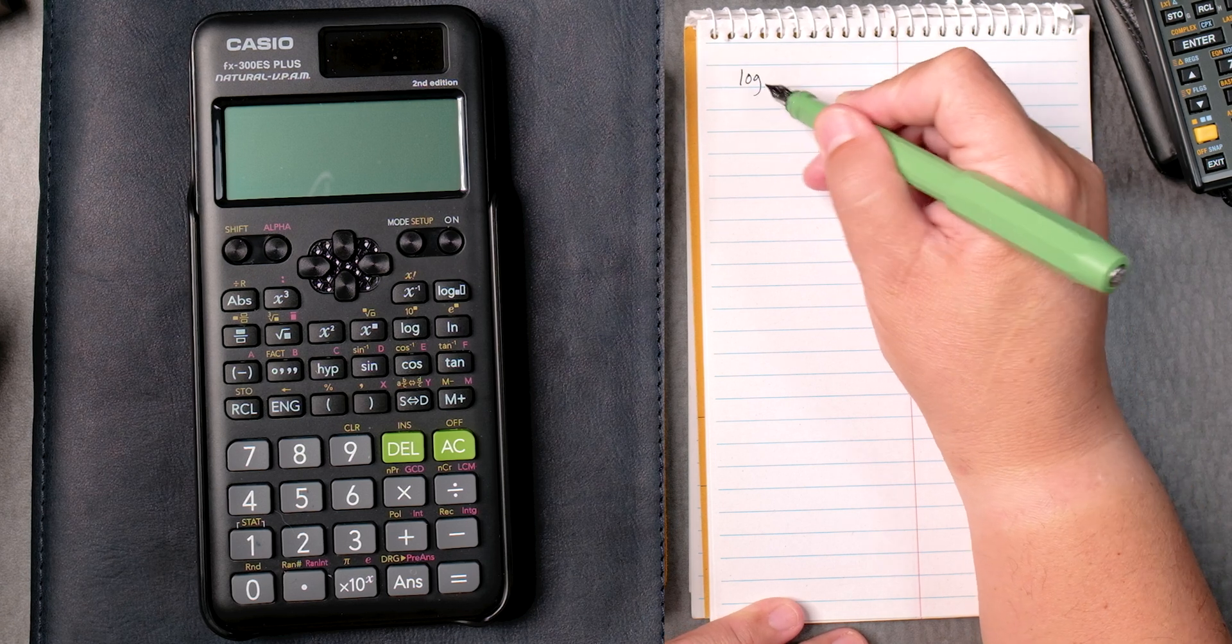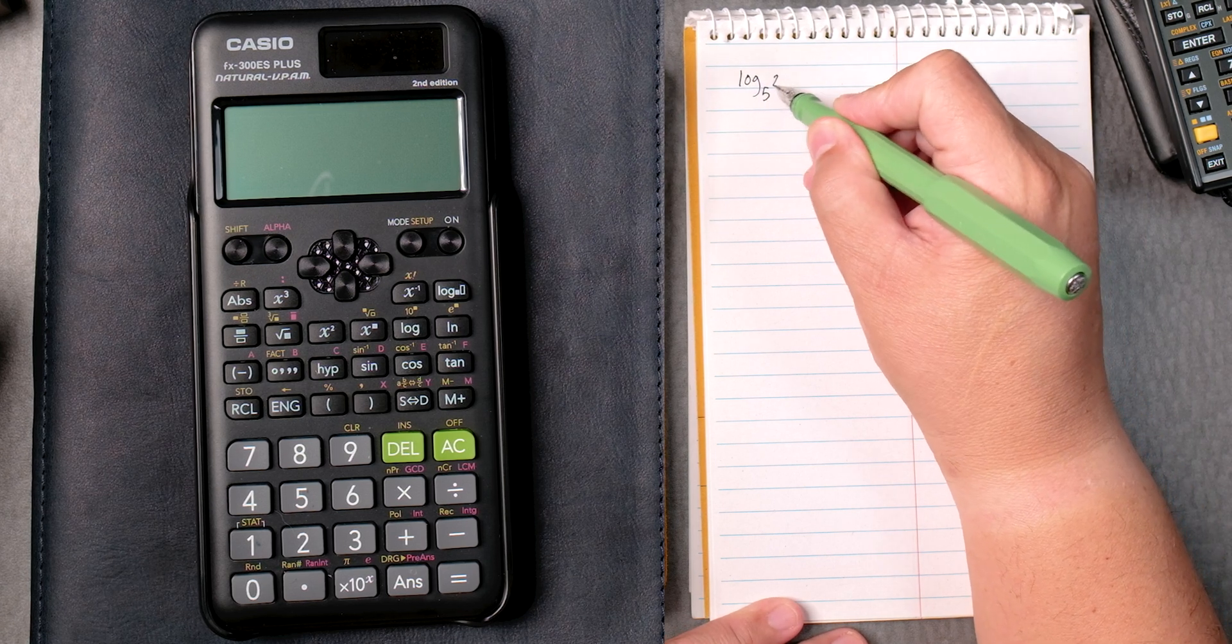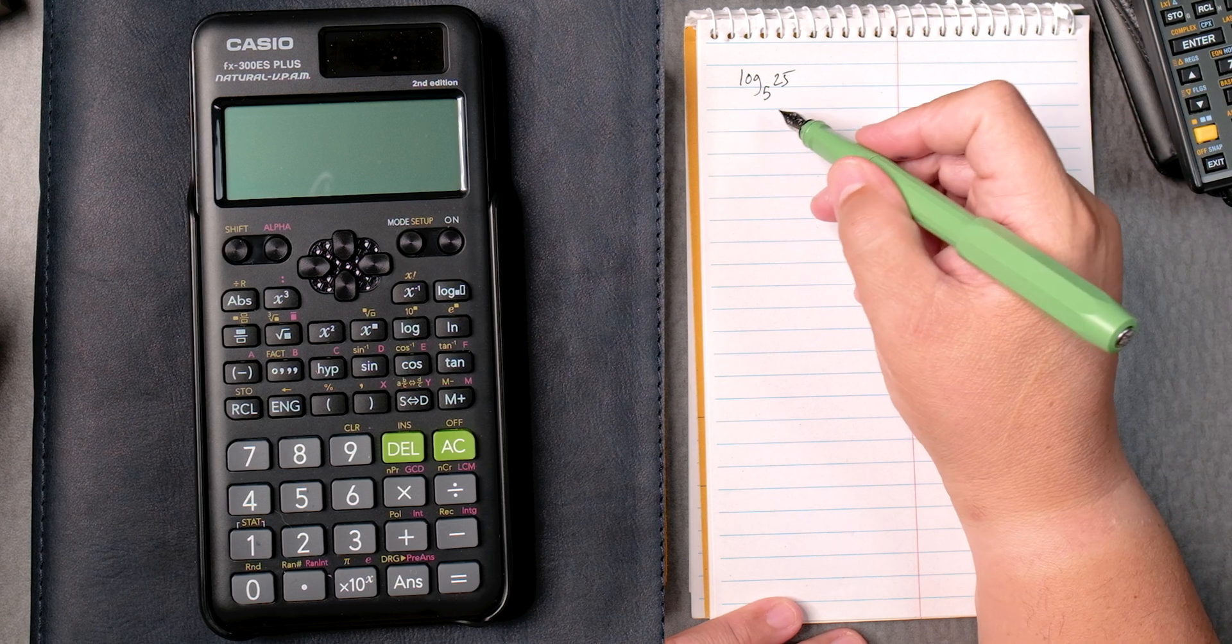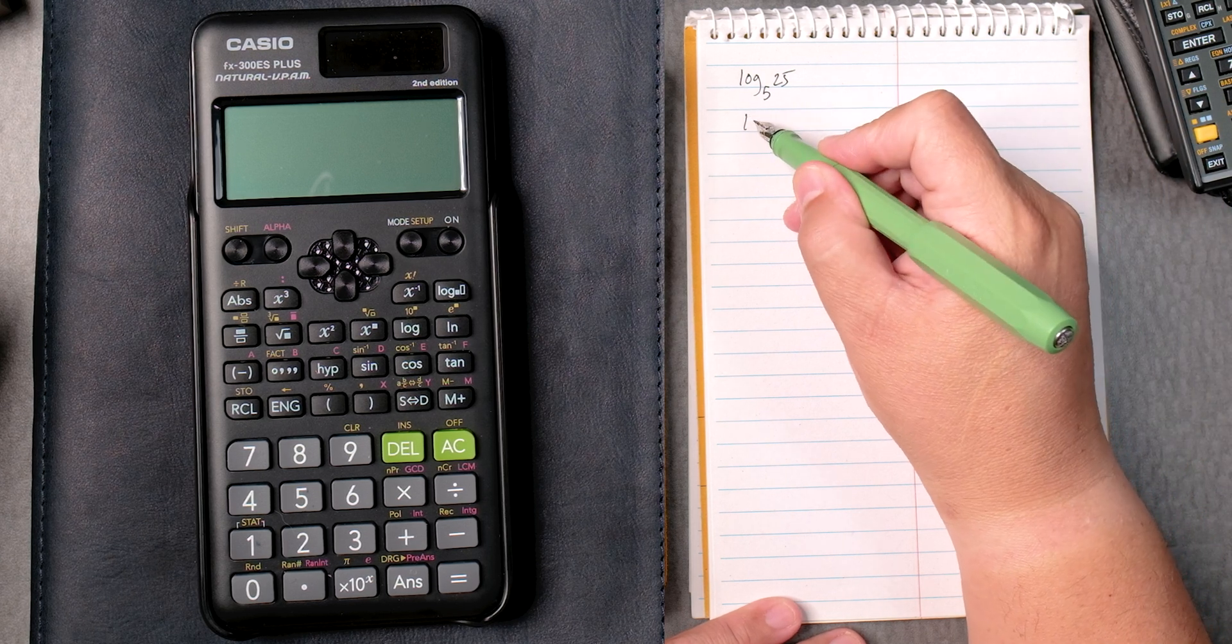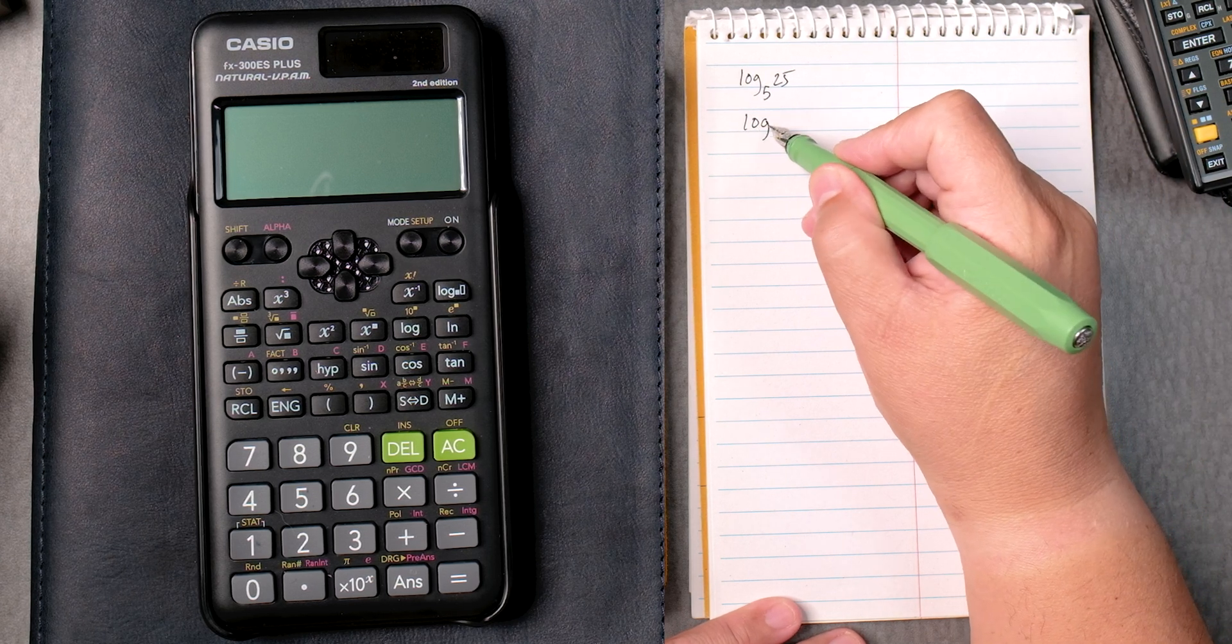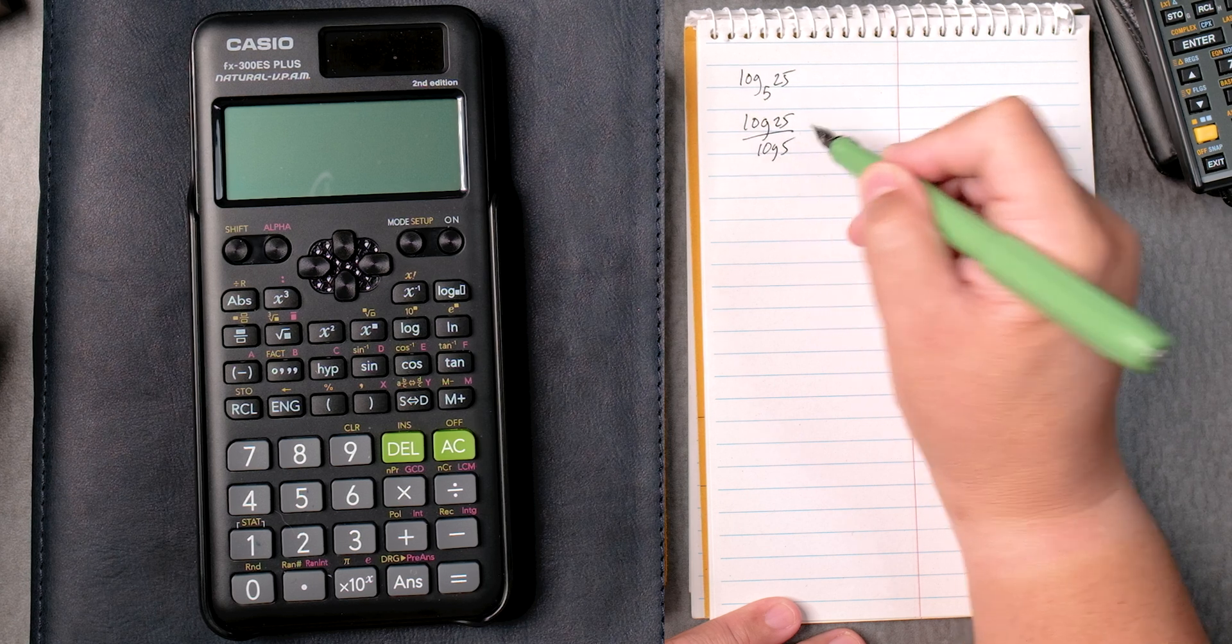So let's say you have the log of base 5, 25. How do I calculate that? Well, you can use this, the log of 25 divided by log of 5. It's equivalent.